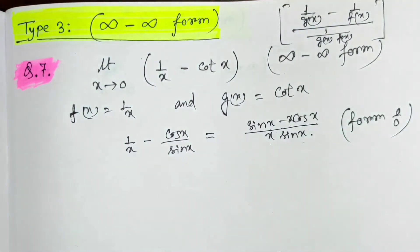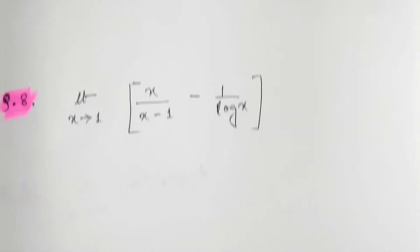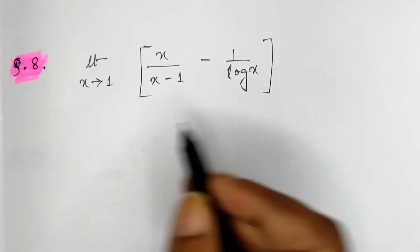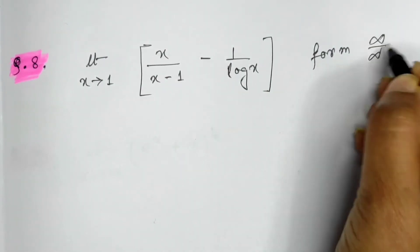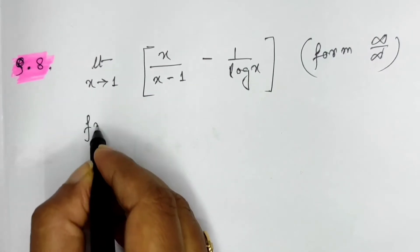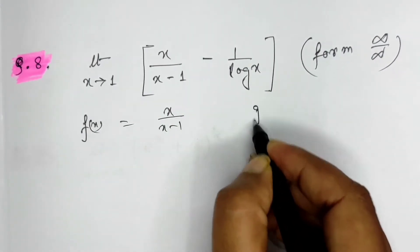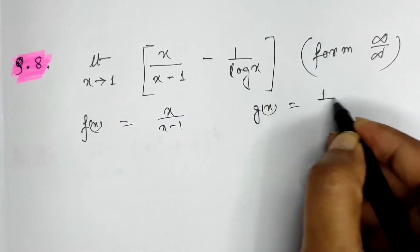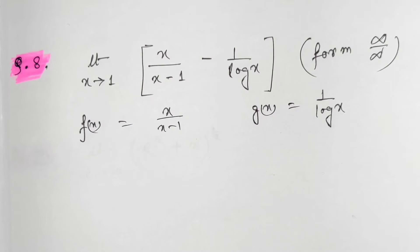One more example is in the form of infinity minus infinity — f(x) = x/(x−1) and g(x) = 1/log x. Again we just simplify and transform it into the form of 0 by 0 and proceed to solve.